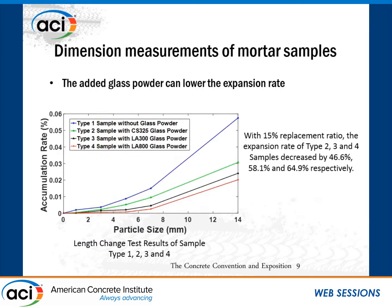These are the expansion test results. It is clear that the added glass powder can significantly reduce the expansion rate at 14-day age. The LA-800 type glass powder performs the best in controlling the expansion potential, demonstrating that finer particle size can help control ASR damage more efficiently. Also, the LA-type glass powder performs better than the CS-type glass powder though they have similar particle size, which may be due to the higher aluminum content in the LA-type glass powder.